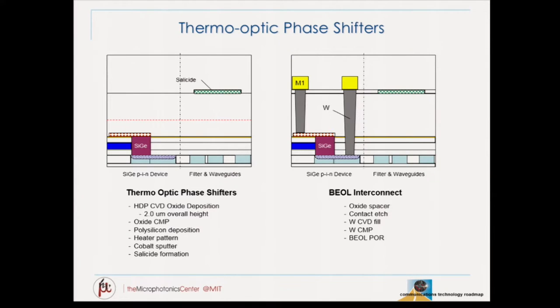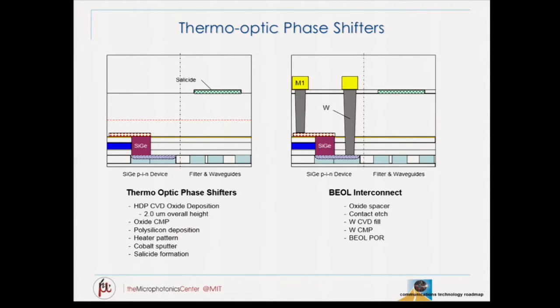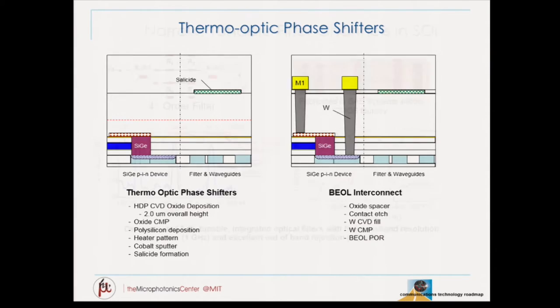One other element we can provide is temperature control — addressing precision issues in photonics, especially for resonators. The process flow can incorporate a salicided contact driven as a thermo-optic phase shifter. It's an optional element positioned above first-level contact, beyond a micron, to avoid absorption losses with the metal. The program resulted in excellent passive waveguide devices — fourth-order pole-zero filters operating as Mach-Zehnder devices designed by Bell Labs — showing excellent tunability and control using the thermo-optic effect.